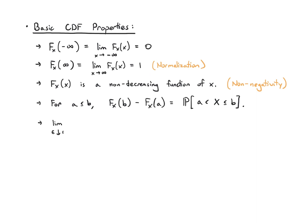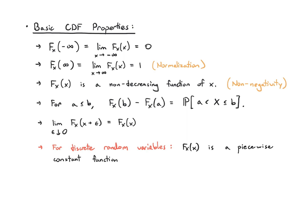Finally, a continuity statement: if I take the limit as epsilon goes down towards zero, I get the value as if it were zero — meaning the CDF is right-continuous. For discrete random variables, the CDF has a special form: it's a piecewise constant function that jumps up by the value of the PMF at every point in the range of the random variable. Let's look at some examples, as all of this will make more sense with them.